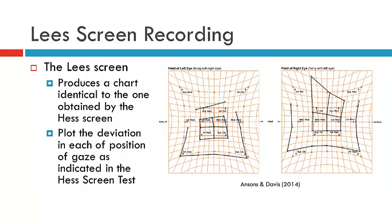In terms of recording the Lee screen findings, we utilize the exact same chart that we use for the Hess screen and we record in exactly the same way. In this instance however, the fixing eye will be determined by the tangent screen that was illuminated.